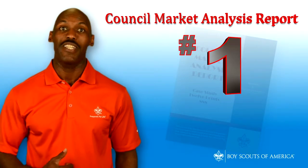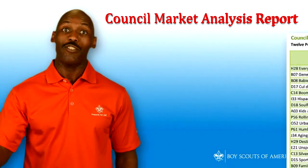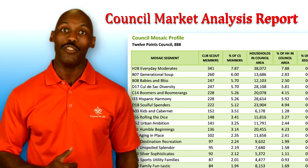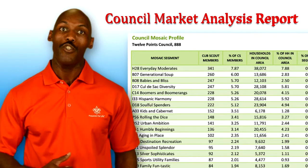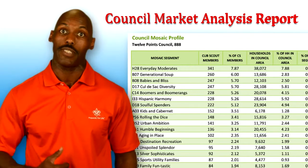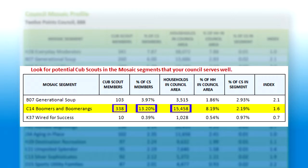And the number one reason you should download and take advantage of your council's report is recruiting. The Council Mosaic Profile gives you a picture of your membership and your community. By using this profile, you can learn which segments best describe most of your members. In this example, you can see that there are 338 Cub Scouts, which is 13.2% of the council's Cub Scout membership. While this is a rather high percentage, there are still more than 15,000 Boomer and Boomerang households in this council to recruit.